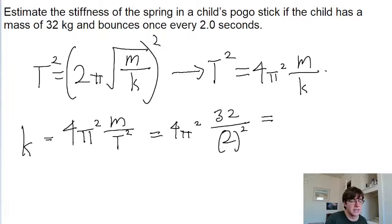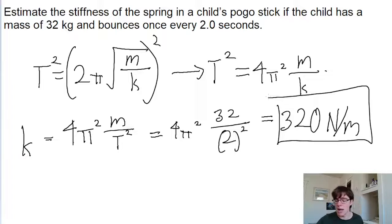If you put this into a calculator, then we find a spring constant of 320 newtons per meter. And so that is our answer to this problem.